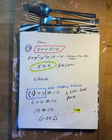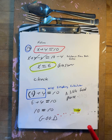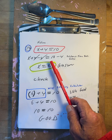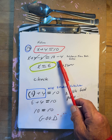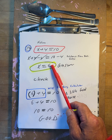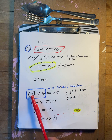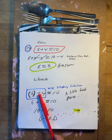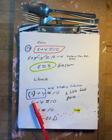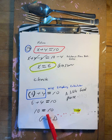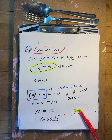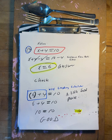x plus four equals ten. Minus four, minus four. So x equals six. Put it in: six plus four is ten. Is ten equal to ten? Yes, it works.